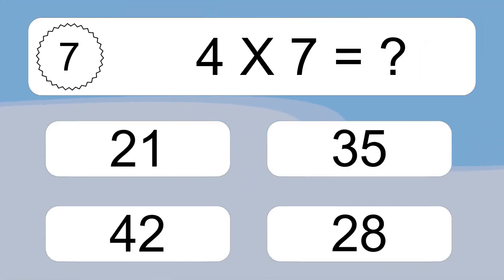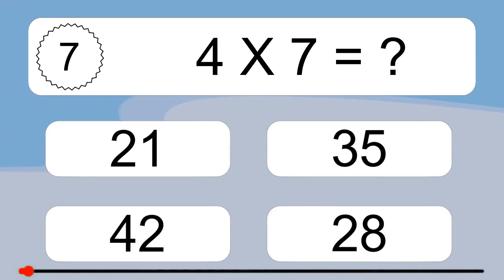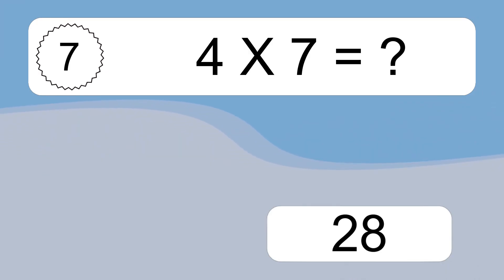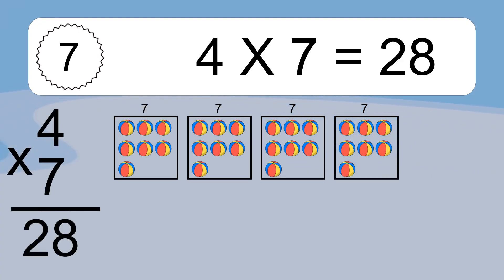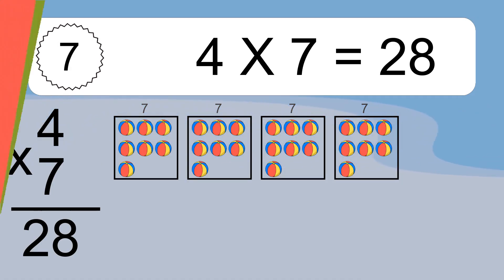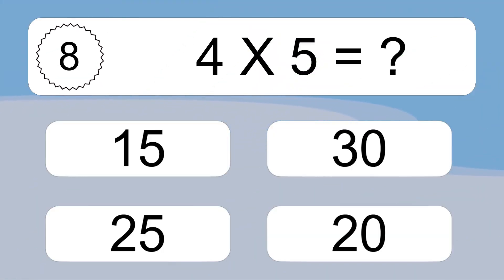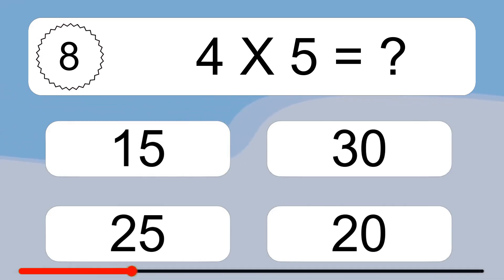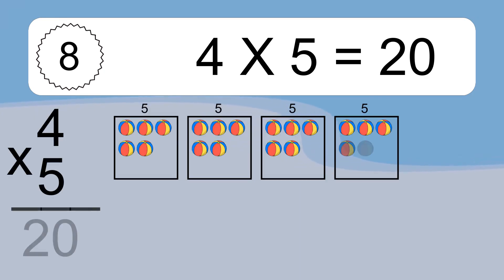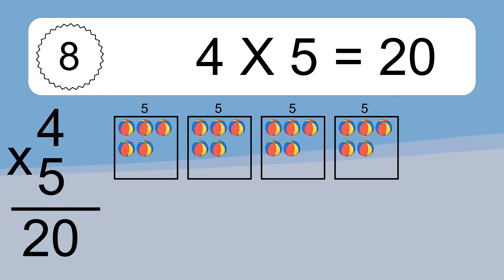4 times 7 equals what? We have 4 boxes, and each box has 7 colorful balls inside. If you count all the balls in all the boxes together, you will have 4 times 7 balls. This equals 28 balls. 4 times 5 equals what? 4 times 5 equals 20. We have 4 boxes, and each box has 5 colorful balls inside. If you count all the balls in all the boxes together, you will have 4 times 5 balls. This equals 20 balls.